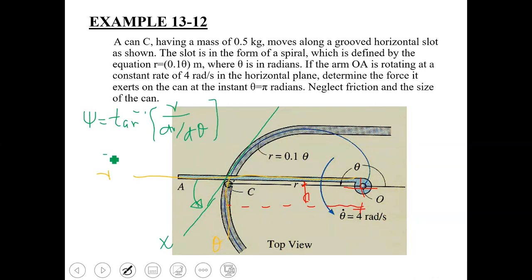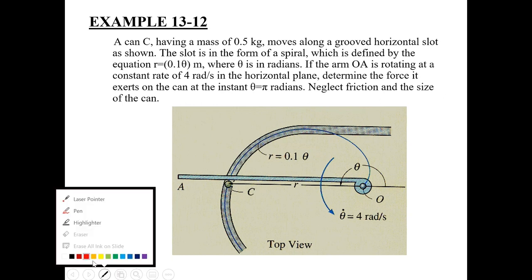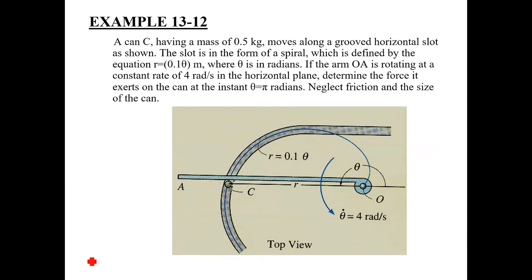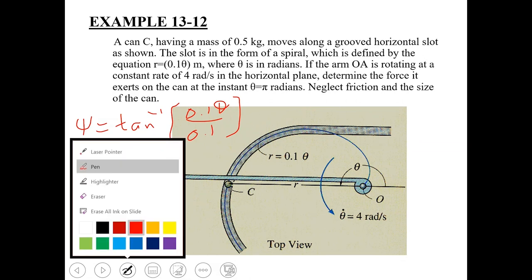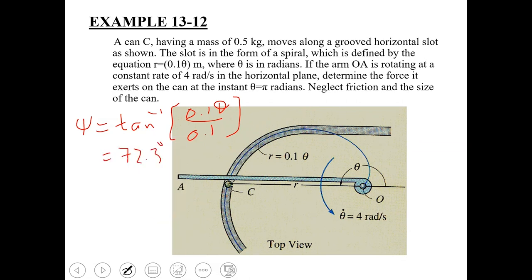Computing ψ: r = 0.1θ and dr/dθ = 0.1, so ψ = tan⁻¹(0.1θ / 0.1) = tan⁻¹(θ). Substituting θ = π radians, ψ comes out to be 72.3 degrees. Since this is a positive quantity, the tangential axis is correctly oriented in the counterclockwise direction from the r axis.